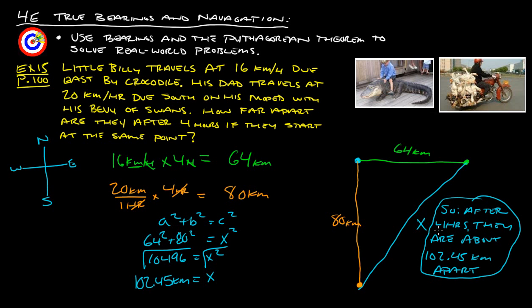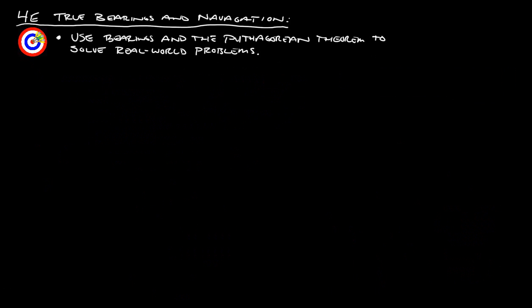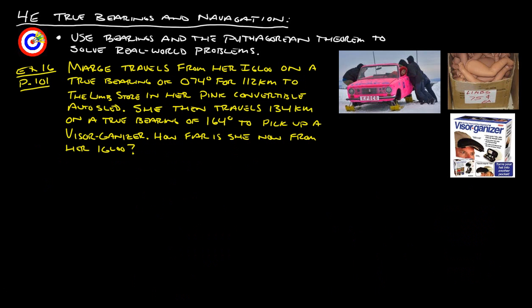That is our answer to that one. Let's take a look at one more example. This is example 16 from page 101. Marge travels from her igloo on a true bearing of 074 degrees for 112 kilometers to the limb store. That's limbs for her dolls, I assume, in her pink convertible auto sled, which is this here. After she goes to the limb store, she then travels 134 kilometers on a true bearing of 164 degrees to pick up a visor-ganizer, which is this here. Everyone needs one of those. How far is she now from her igloo?